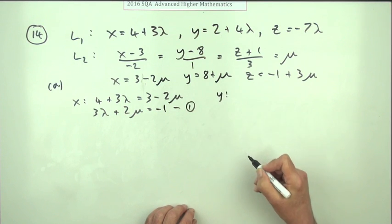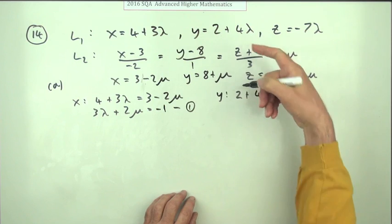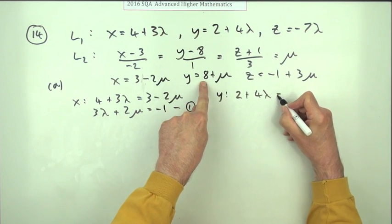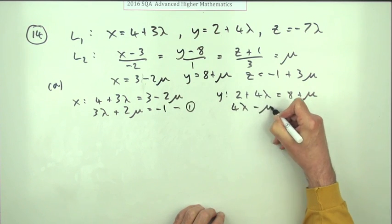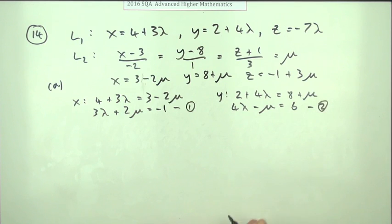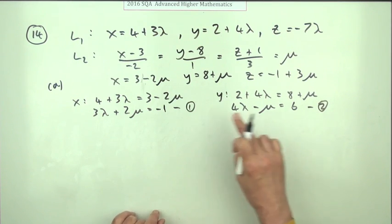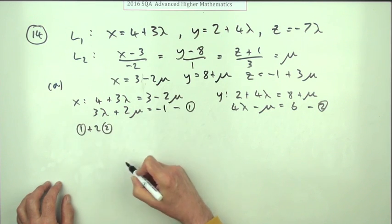Y coordinates: 2 plus 4 lambda should be equal to 8 plus mu. Four lambda minus mu should be 6. Call that equation 2. Right, double this and add it to that. So the plan is I'll do one plus two lots of two.